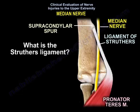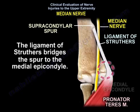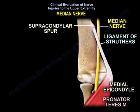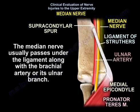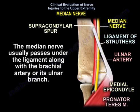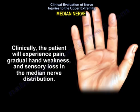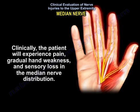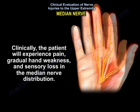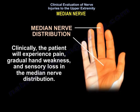What is Struthers ligament? It is a ligament that bridges the spur to the medial epicondyle. The median nerve usually passes under the ligament along with the brachial artery or its inner branch. Clinically, the patient will experience pain, gradual hand weakness, and sensory loss in the median nerve distribution.